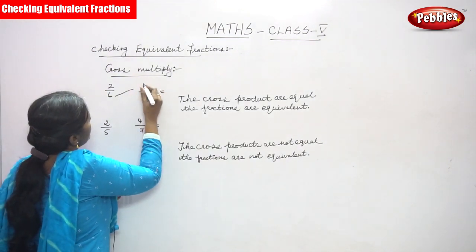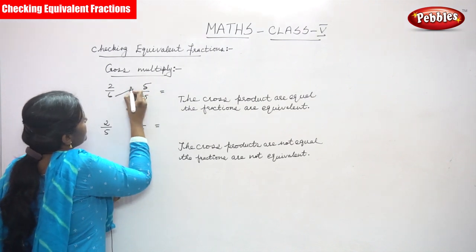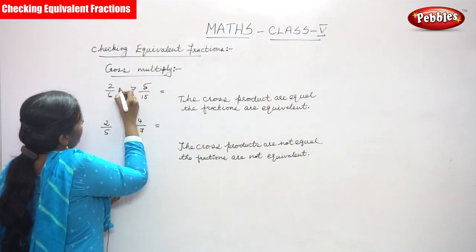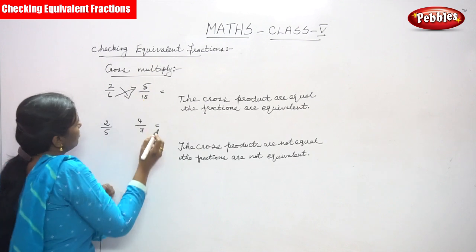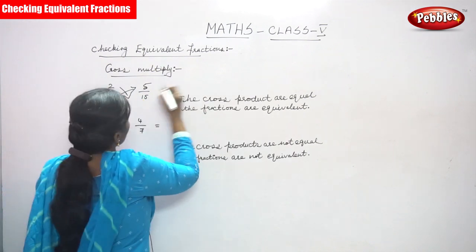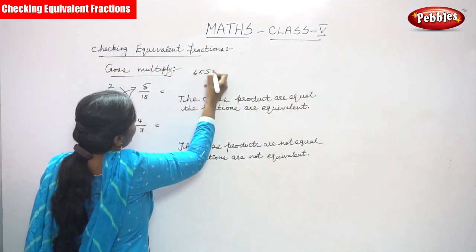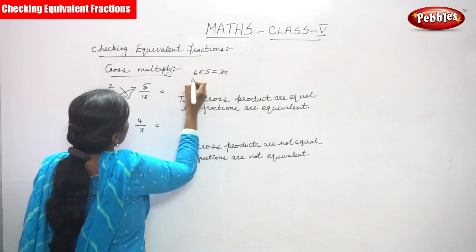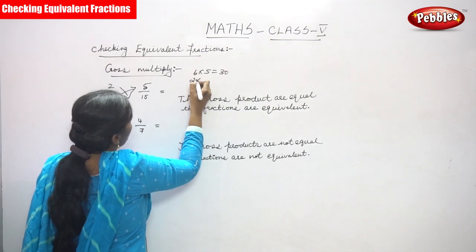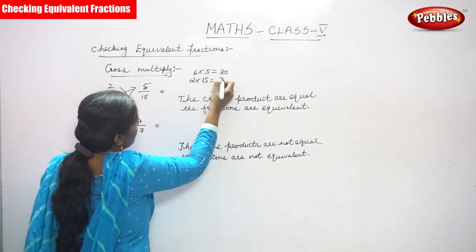So here we have 5 by 15. We do 6 into 5 and 2 into 15. So 2 into 15 gives us — 6 into 5, what do you get? 30. And 2 into 15 you also get 30.